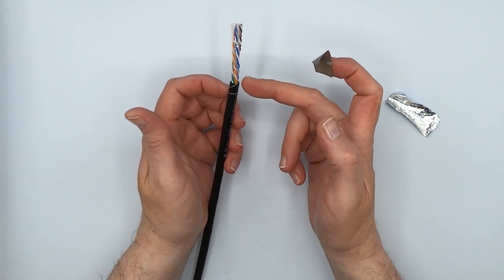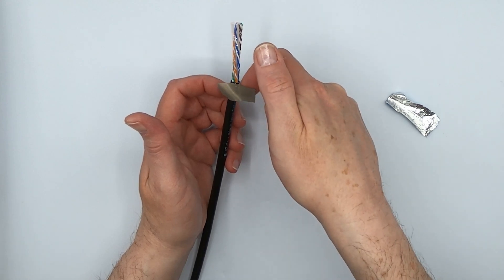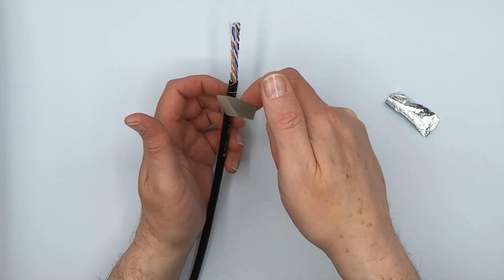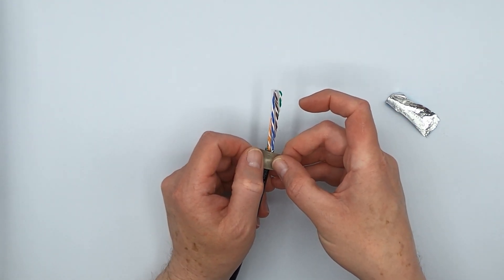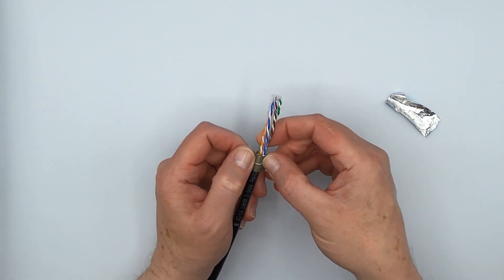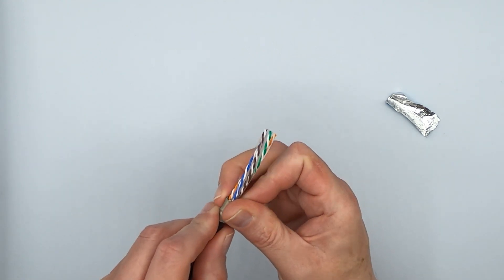And then take your copper fabric strip here. And depending on whether you're terminating a keystone jack or an RJ45 plug, the position of this copper fabric strip is going to change. We'll just assume that we're going to do a keystone jack, for example. So you're going to put it right at the edge. And voila.